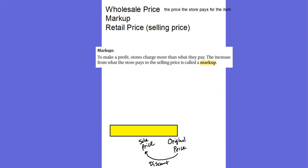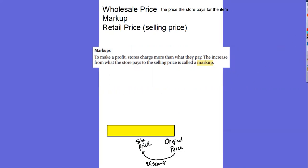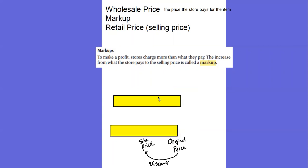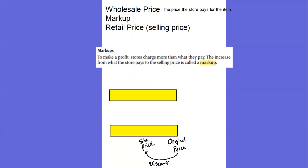Now things are going to change a little bit because we're going to look at a slightly different kind of problem. This time, instead of my original bar representing the original price, it's going to represent the wholesale price. The wholesale price is the price the store pays for the item — the cost to the store. If someone owns a store, they don't receive those goods for free; they had to pay money to acquire those goods and put them in their store. The amount it costs the store is the wholesale price.